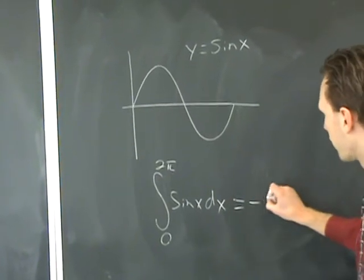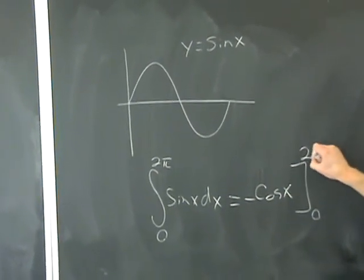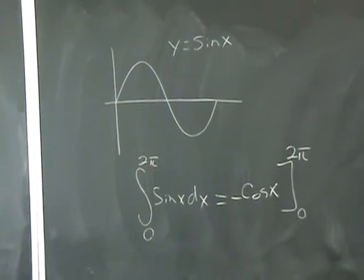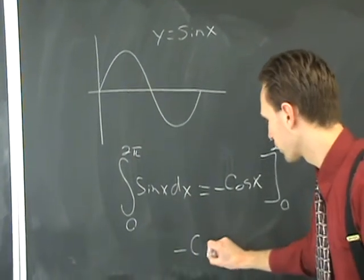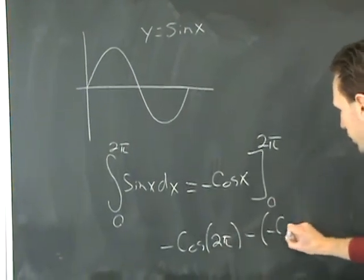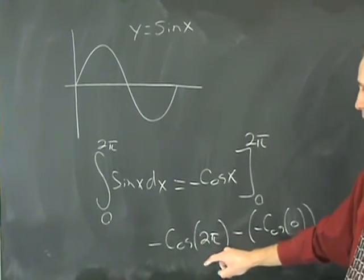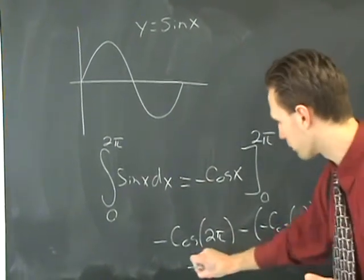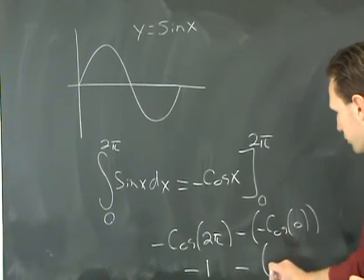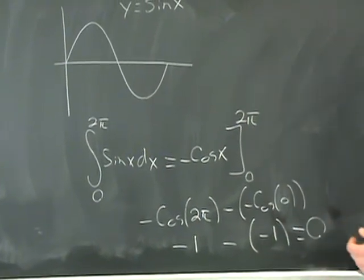This equals minus cosine X from 0 to 2 pi. All you've got to do is evaluate it. So this equals minus cosine of 2 pi minus cosine of 0. The cosine of 2 pi is 1, so you have minus 1 minus cosine of 0 is likewise minus 1, which does indeed equal 0.